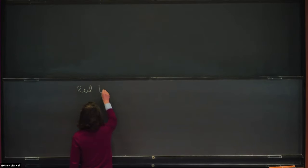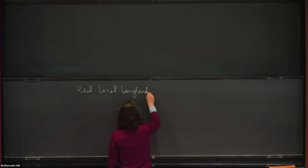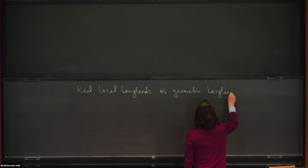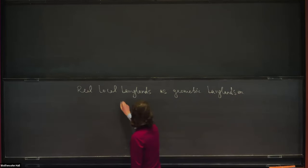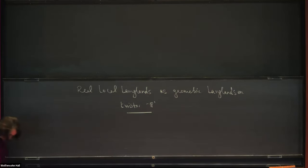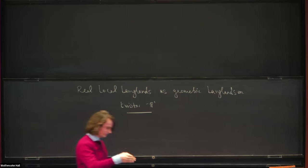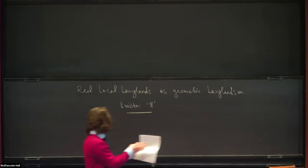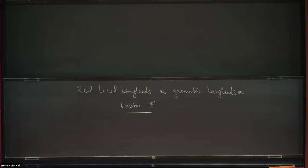The title of the series is Real Local Langlands as Geometric Langlands on the Twistor P1. I'm giving a series of three lectures, which means usually the first talk should be very colloquium-style, and then I should get more advanced as I go on. I will slightly break that rule and start by trying to give the big picture, which will probably not be very comprehensible. For the first 20 minutes or so, bear with me, and I will try to lay out the ground.